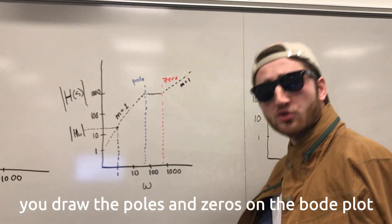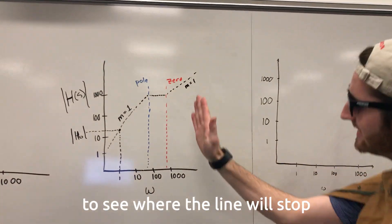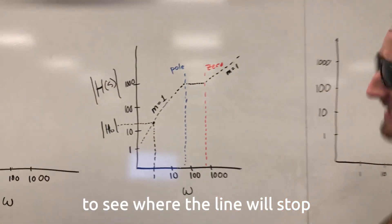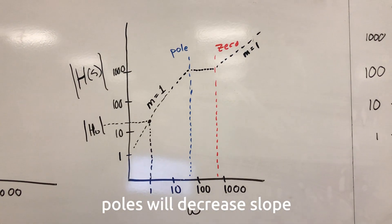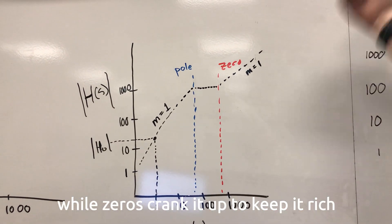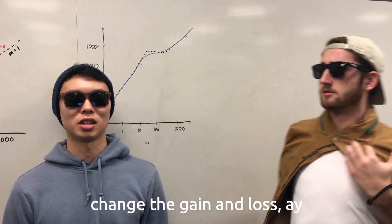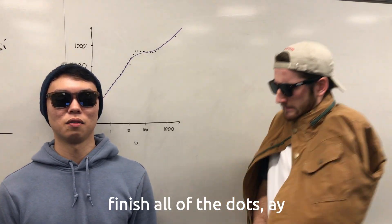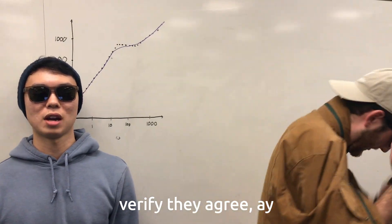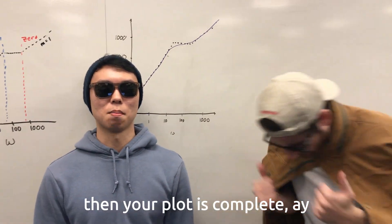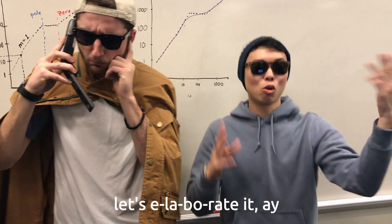You draw the poles and the zeros on the Bode plot. Draw them at some asymptotes to see where the line will stop. Draw them at some dotted lines to see where the slope will switch. Poles will decrease slope; zeros crank it up and keep it rich. Repeated poles and zeros change the gain and loss. Finish all of the dots, connect your points in line. Verify they agree, then your plot is complete. Let us not elaborate — let's elaborate it.